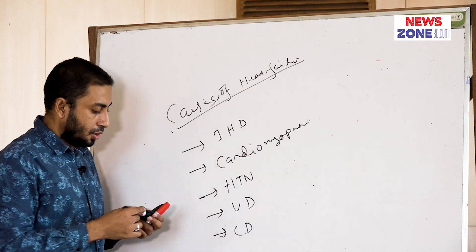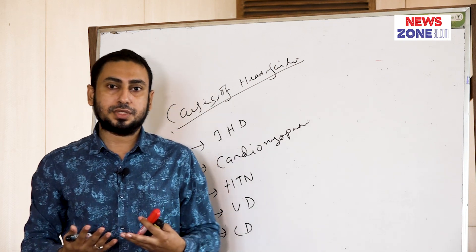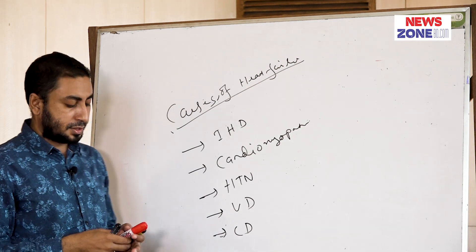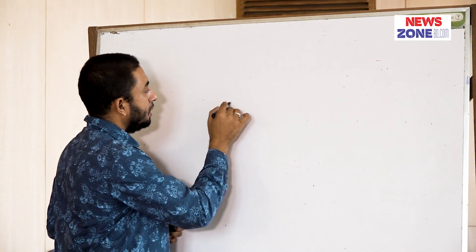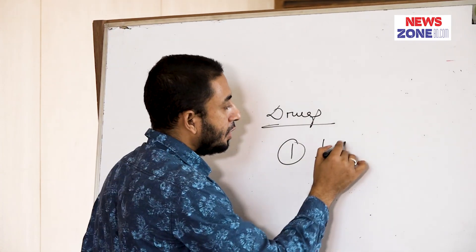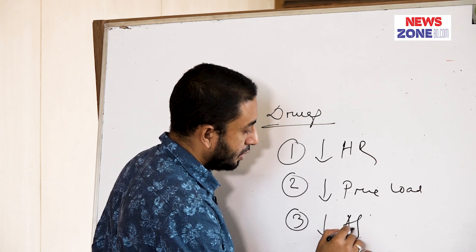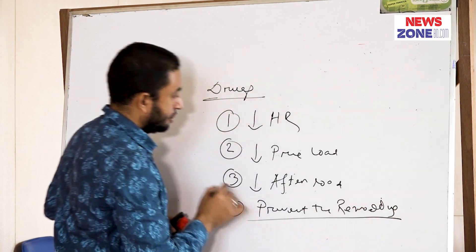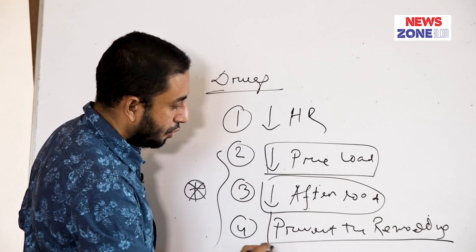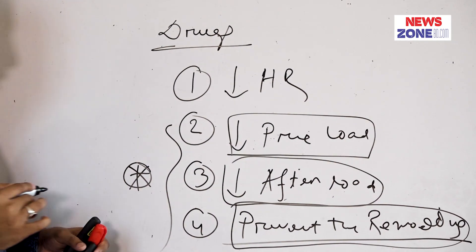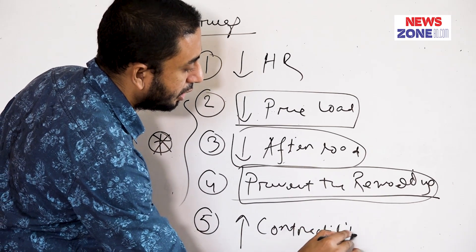Now I want to discuss therapeutic strategies. If you know the pathophysiology properly, it is much easier to memorize the drugs. The therapeutic strategies are: we have to decrease the heart rate, we have to decrease the preload, we have to decrease the afterload, we have to prevent remodeling of the heart, and we have to increase the contractility of the heart.